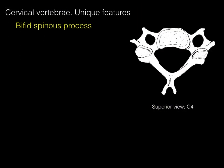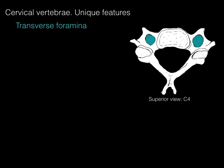Some vertebral features unique to the cervical vertebrae include a bifid spinous process — bifid meaning it bifurcates, or there are two parts to the spinous process. In addition, there are transverse foramina, which are two holes in the transverse part of the vertebra.